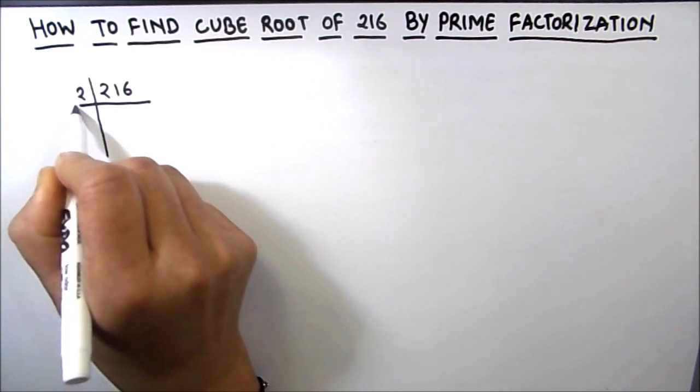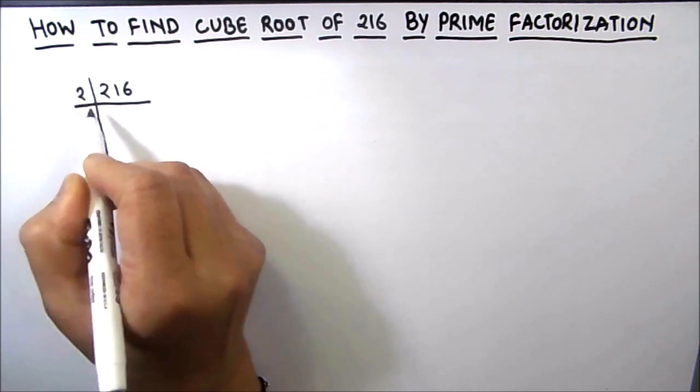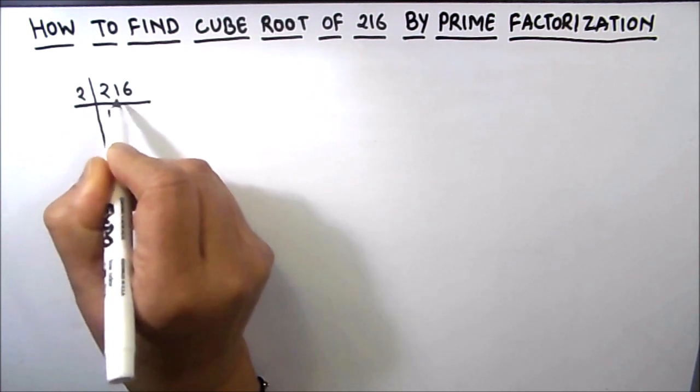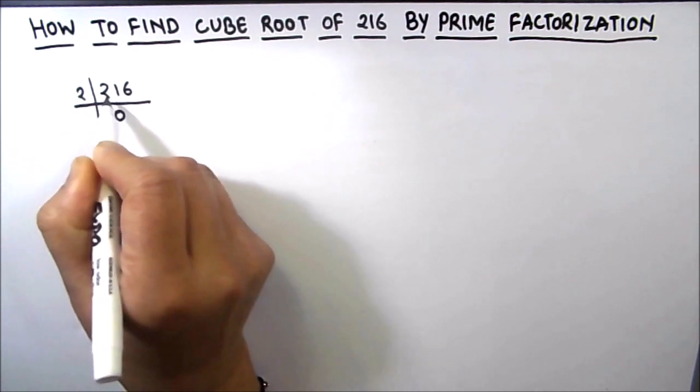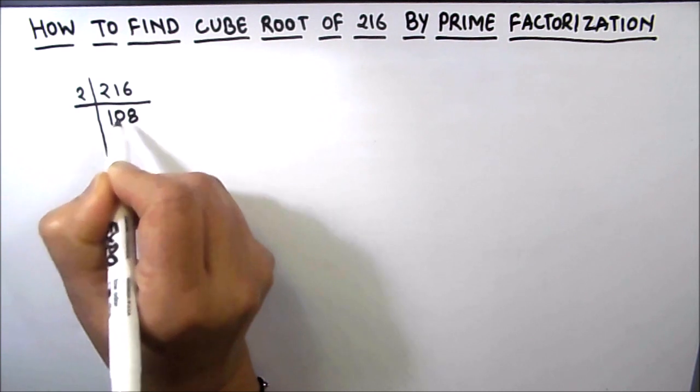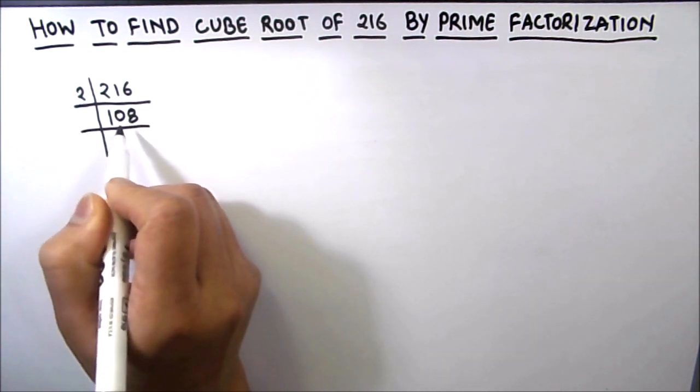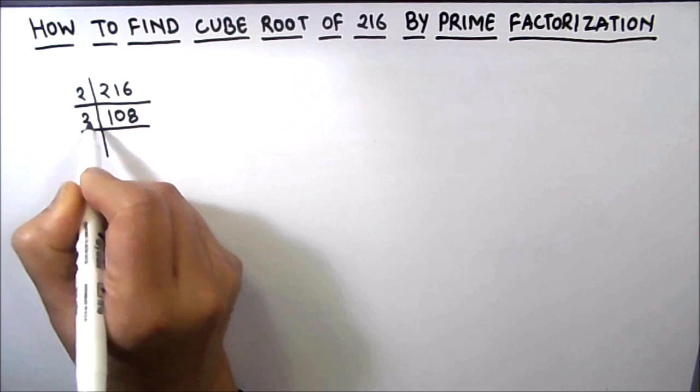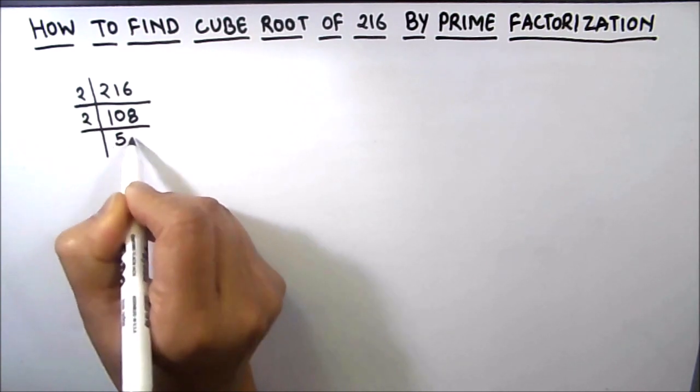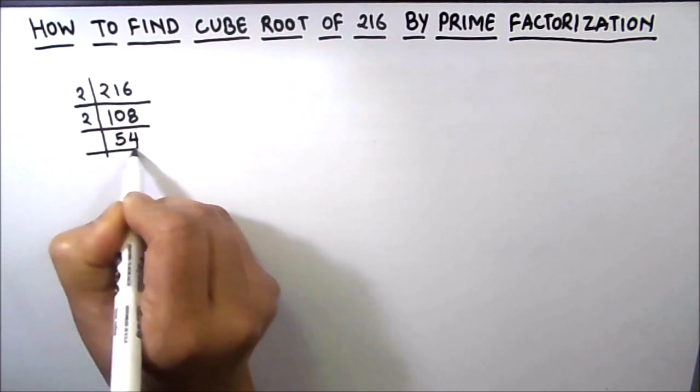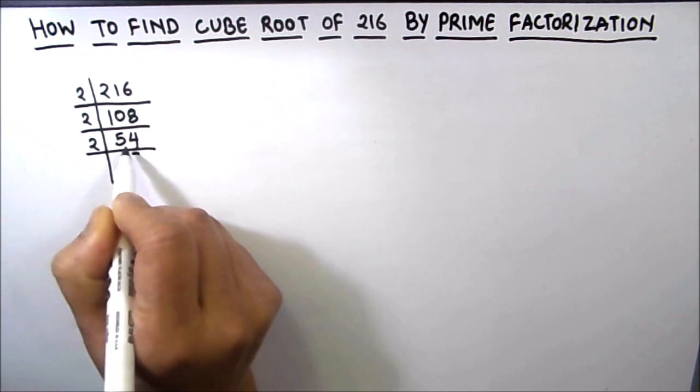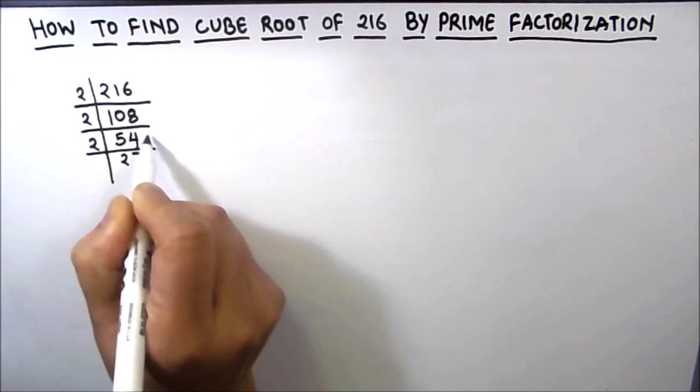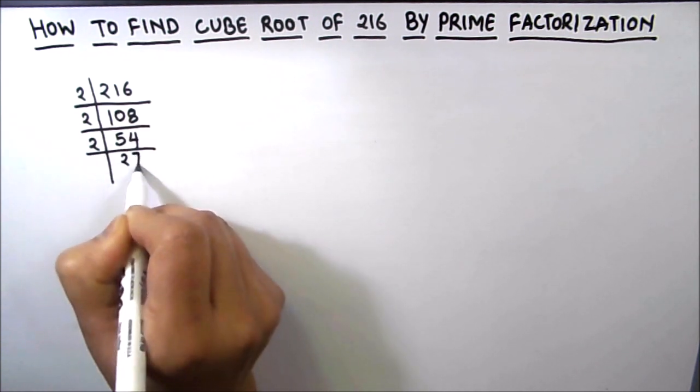So 2 times 1 is 2, 2 times 0, and then 2 times 8 is 16. 108 is an even number, so we are going to use 2. So 2 times 5 is 10, and 2 times 4 is 8, 2 times 2 is 4, 1 is carried over so this becomes 14, so 2 times 7 is 14.